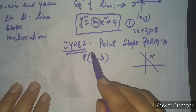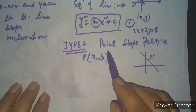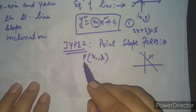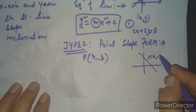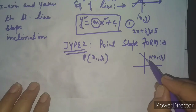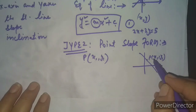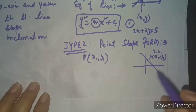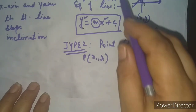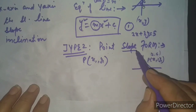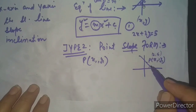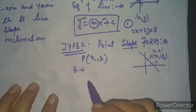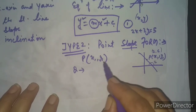Now, type number 2 of the equation of a line is known as the point-slope form. What will be provided here? We will be provided with one particular point lying on the line — this is point P with coordinates x₁, y₁. It will be given as a specific point, like (2, 5). Along with that, the slope will also be provided, or we may be given the angle of inclination theta from which we can find the slope.